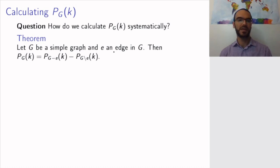It's not obvious from the beginning why this is helpful, but it will be as we will see in a few minutes. But first let's look at the theorem itself. So if you have a simple graph and an edge in your simple graph, then the number of colorings in the big graph is equal to the number of colorings in the graph with the edge deleted minus the number of colorings in the graph with the edge contracted.